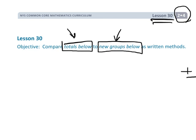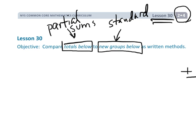You as a teacher might want to know what these are. Basically, I think of Totals Below as partial sums, and I think of the New Groups Below method as the standard algorithm. The purpose of this lesson is to give students another way of thinking about addition, because the whole idea of Common Core is we want to teach students for understanding — we don't want to just give them a bunch of rules to memorize. And that's where this lesson is coming from.